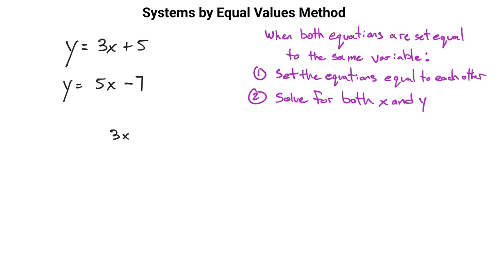We'll start by setting 3x plus 5 equal to 5x minus 7, because they are both equal to y.